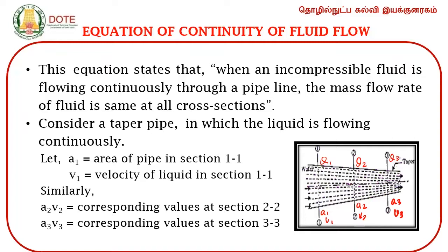The total rate of flow Q1 at section 1-1, Q2 at section 2-2, and Q3 at section 3-3 remains constant. This is called the equation of continuity. It states that when an incompressible fluid is flowing continuously through a pipeline, the mass flow rate or discharge is the same at all cross sections — whether at 1-1, 2-2, or 3-3.